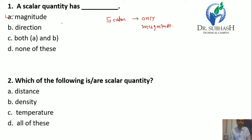Question 2: Which of the following is a scalar quantity? Distance has only magnitude. Density has only magnitude. Temperature has only magnitude. So all of these are scalar quantities. The answer is all of the above.